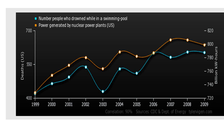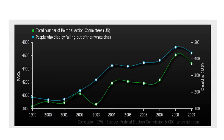What is so interesting about these plots or these correlation patterns? Well, the variables or events or quantities are not at all related. We have another example wherein the number of political action committees and people who died by falling out of a wheelchair are also correlated.